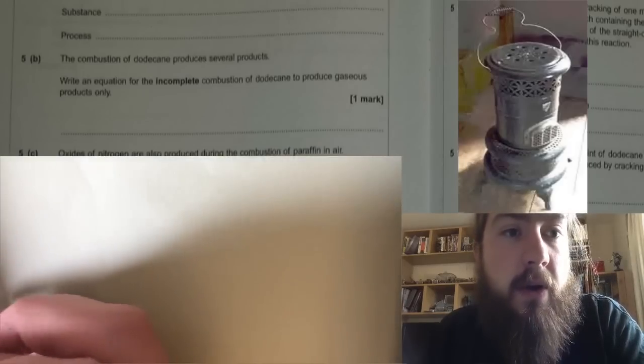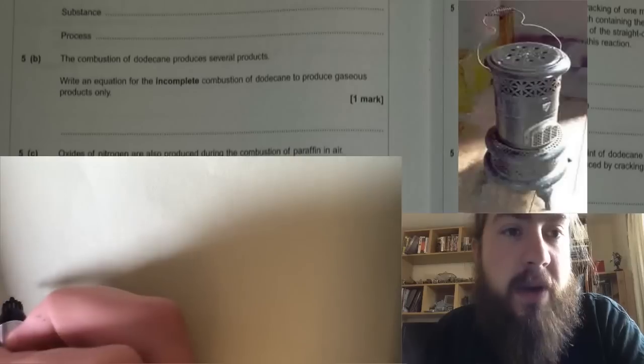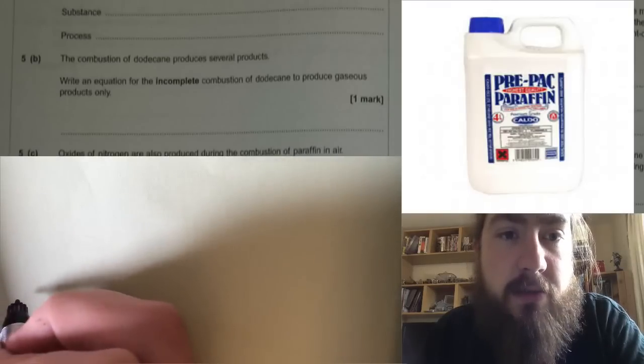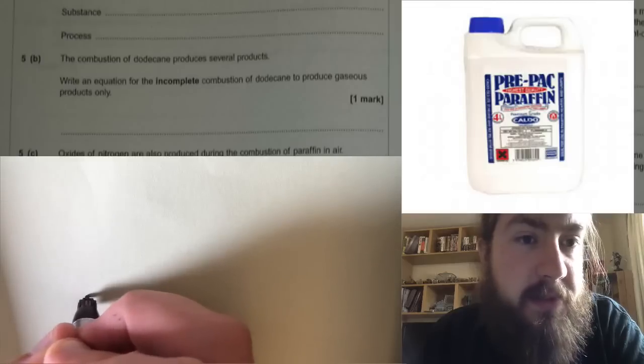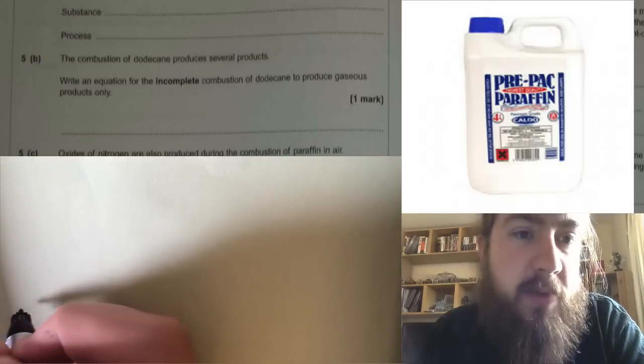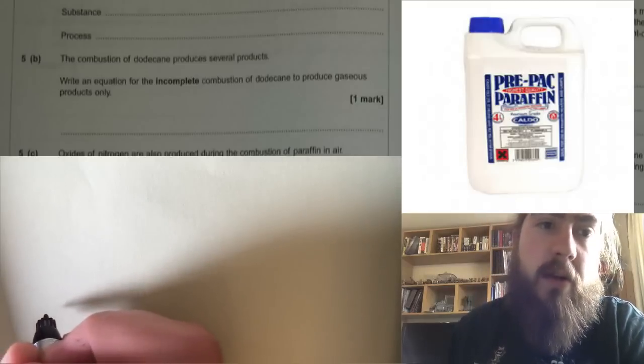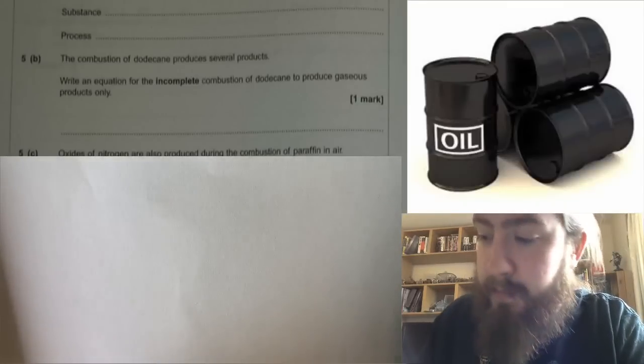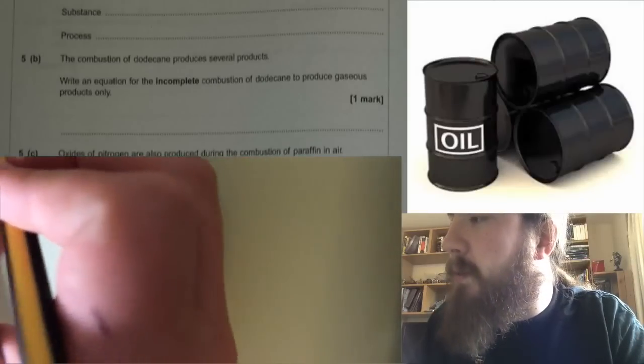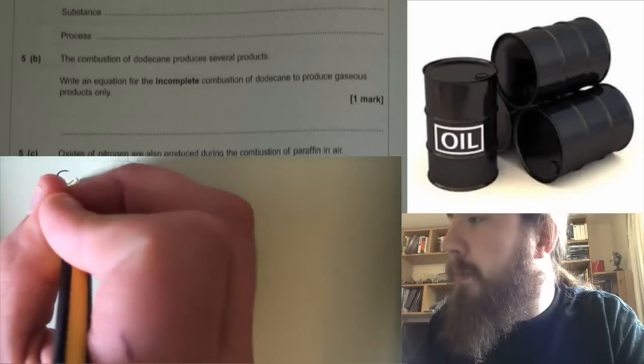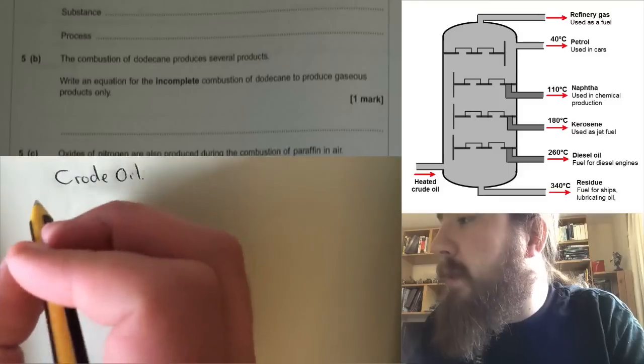Okay, question five. Some oil-fired heaters use paraffin as a fuel. Give the name of the substance from which paraffin is obtained and state the name of the process used to obtain paraffin from this substance. This is a nice easy GCSE question. Paraffin is obtained from crude oil and the way that we obtain that is from fractional distillation.